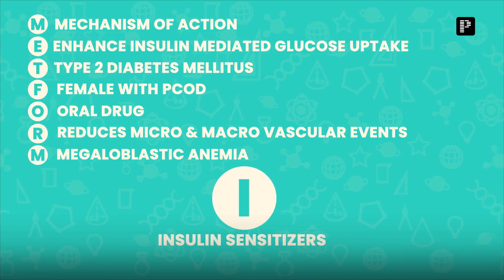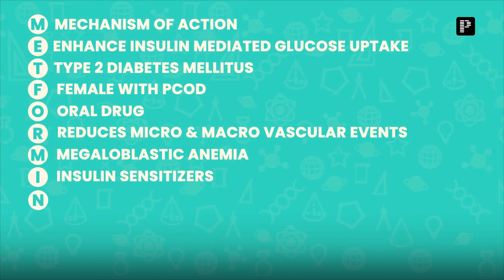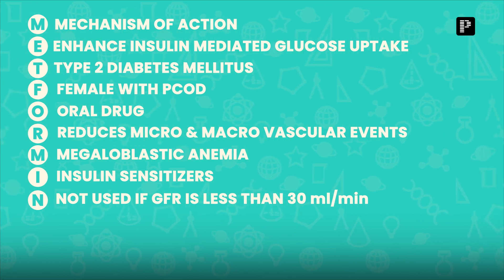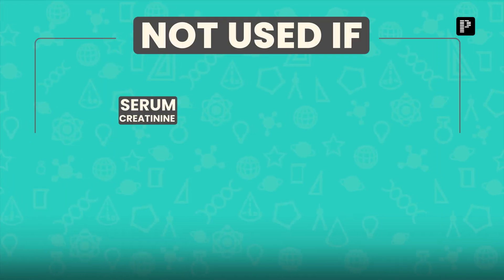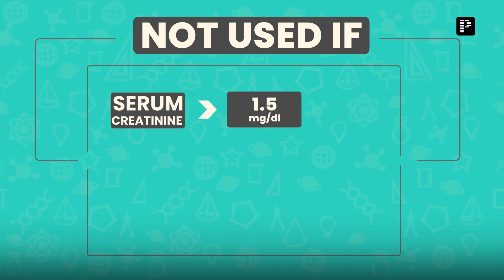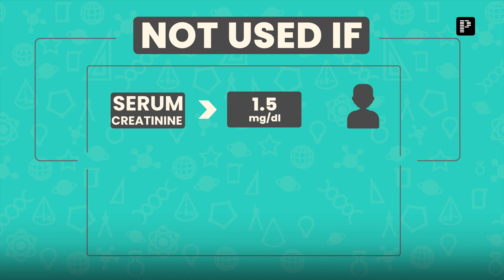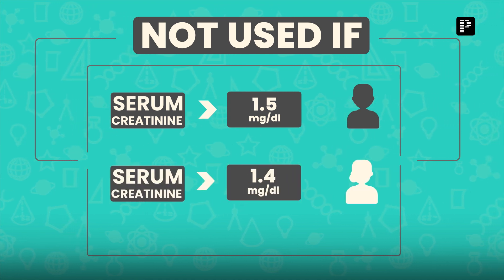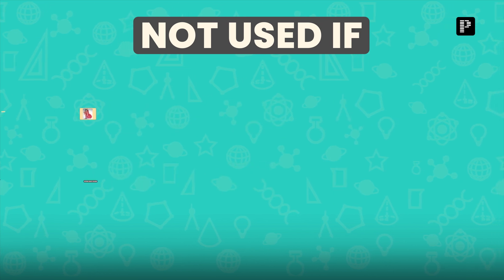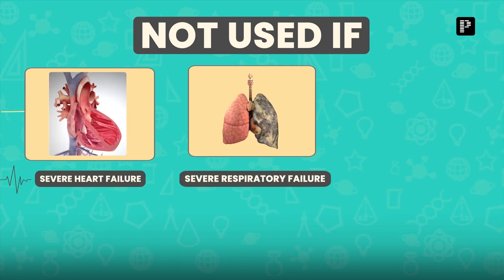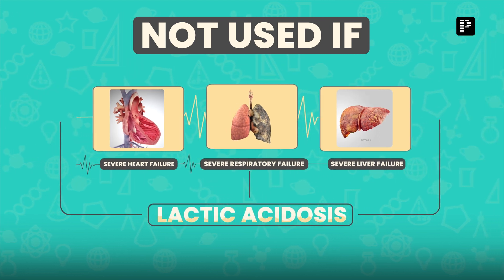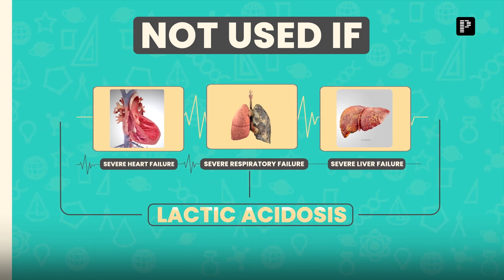I stands for insulin sensitizer. For the last letter N — it is not used if the GFR is less than 30 mL per minute. It is not used if the serum creatinine is more than 1.5 mg/dL in a male or more than 1.4 mg/dL in a female. It is also not used if there is severe heart failure, severe respiratory failure, or severe liver failure.